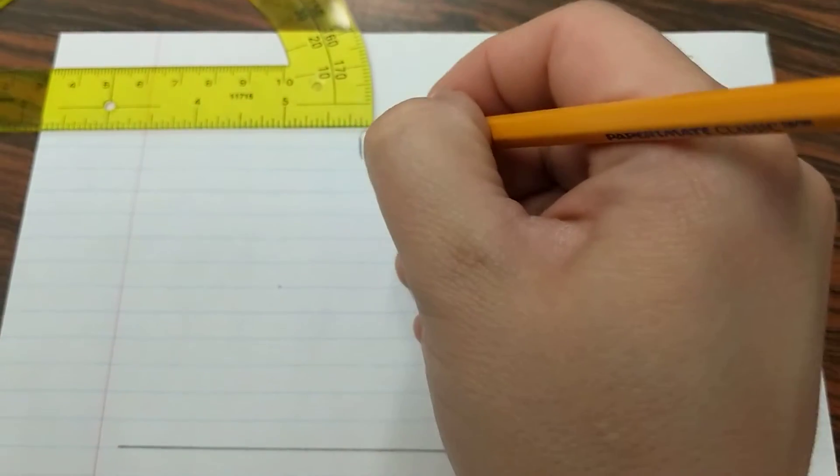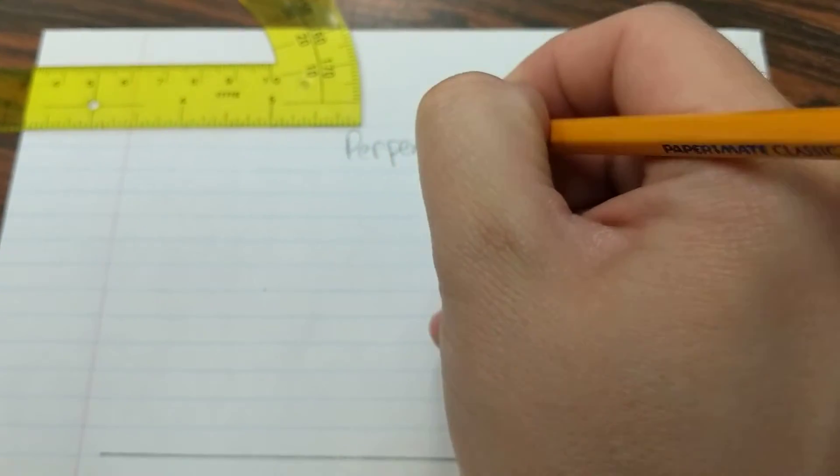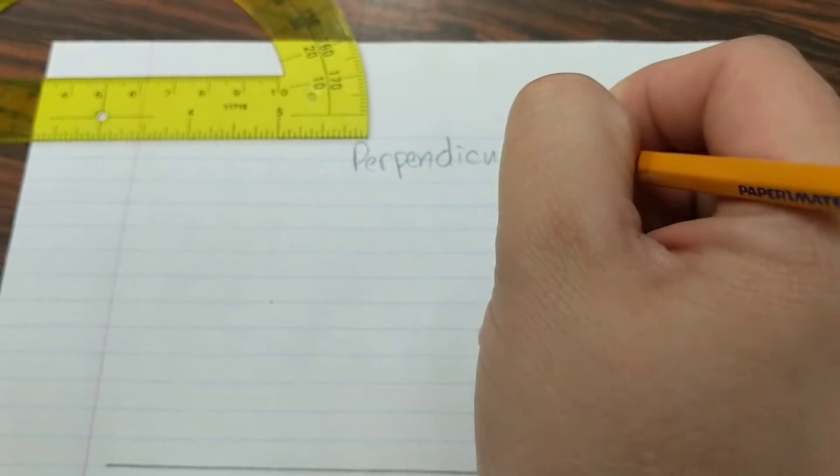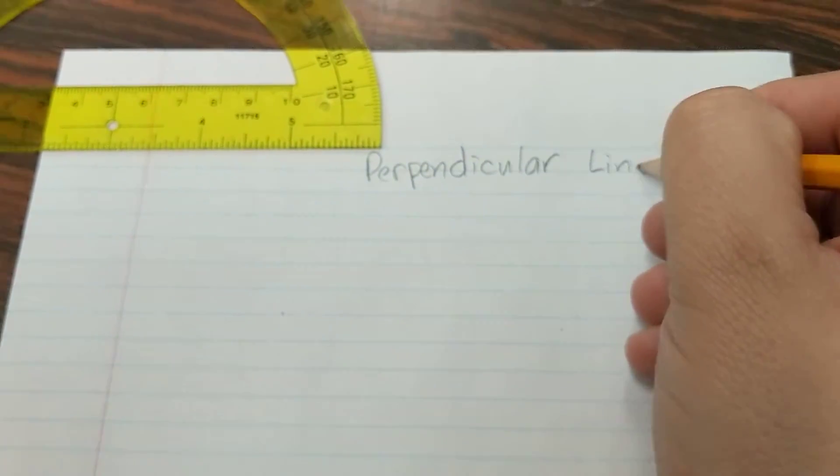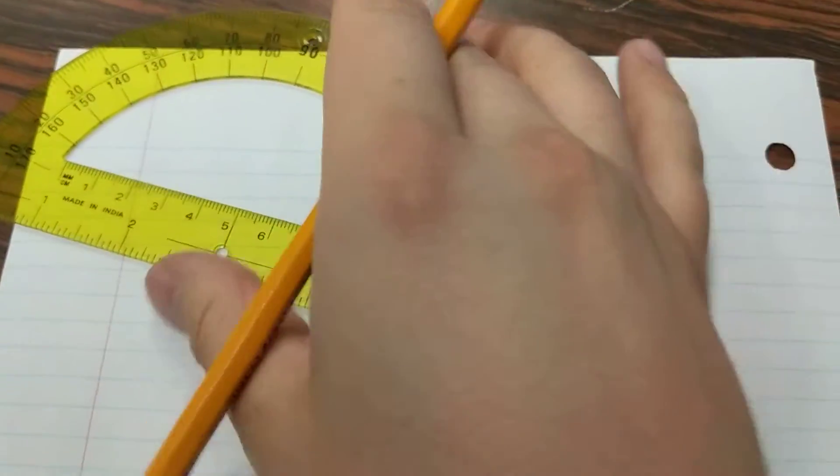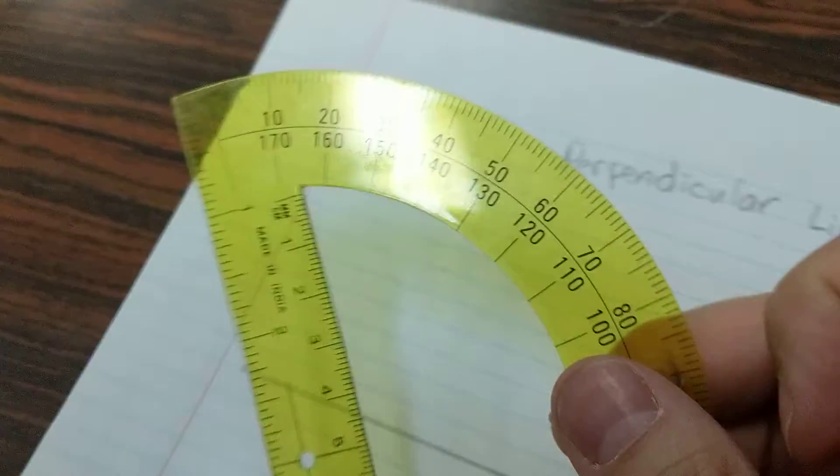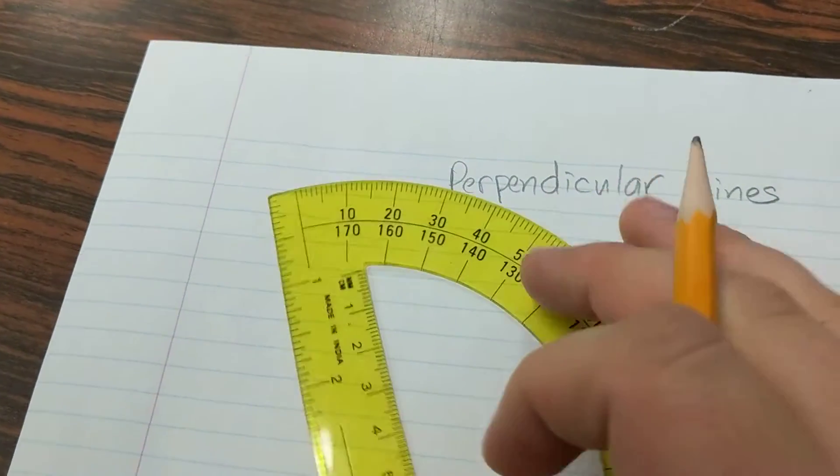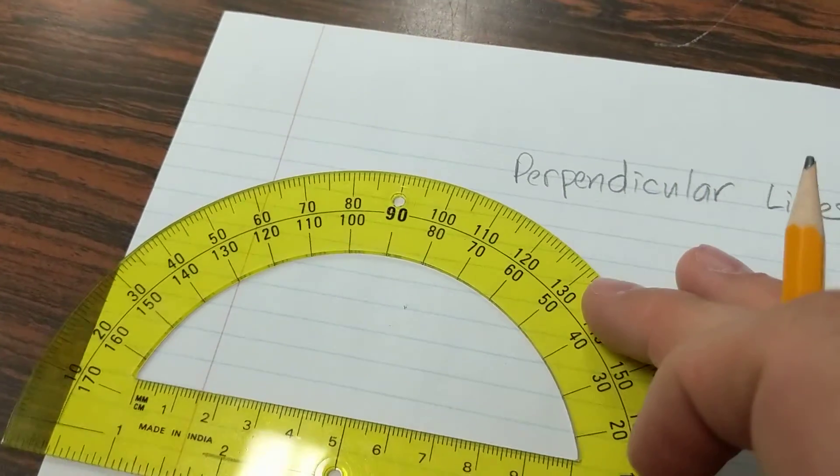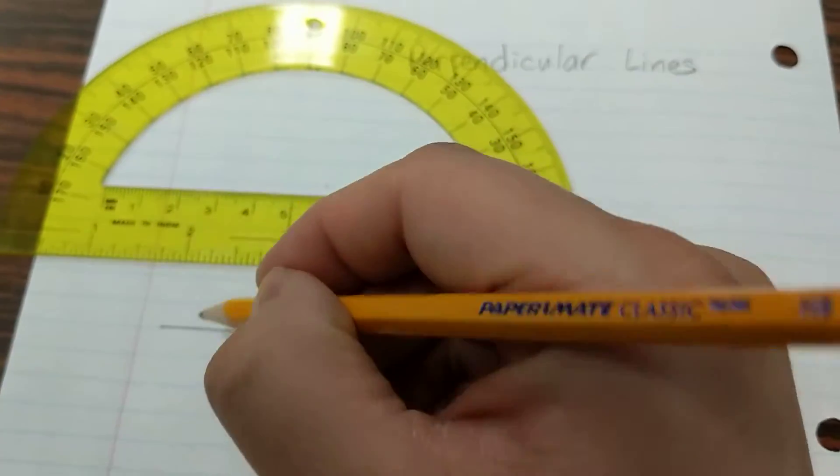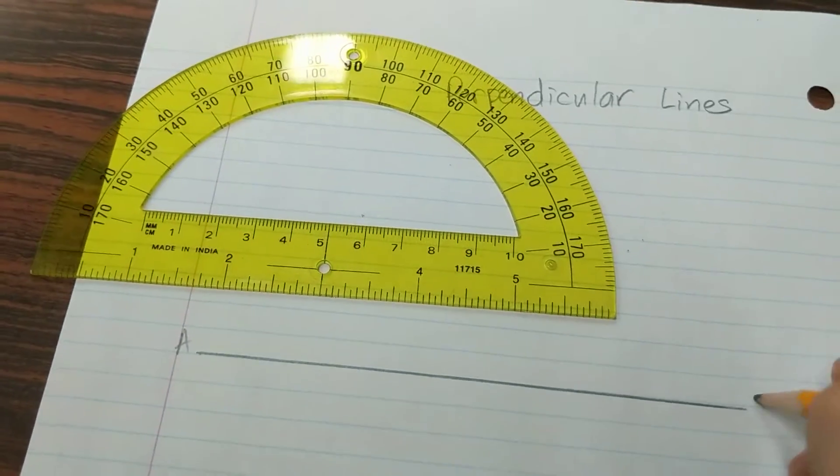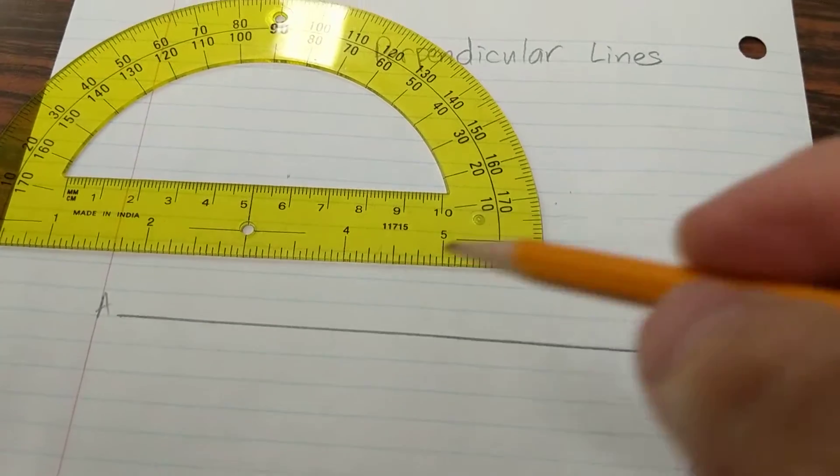Alright, another way to draw perpendicular lines is to use a protractor. I showed you how to use a compass. The way to do the protractor is like so: you're going to pick any point on the line. So if this is line AB, we're wanting to draw a line that's perpendicular.